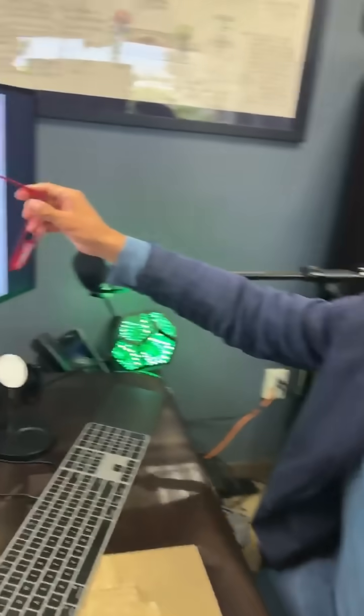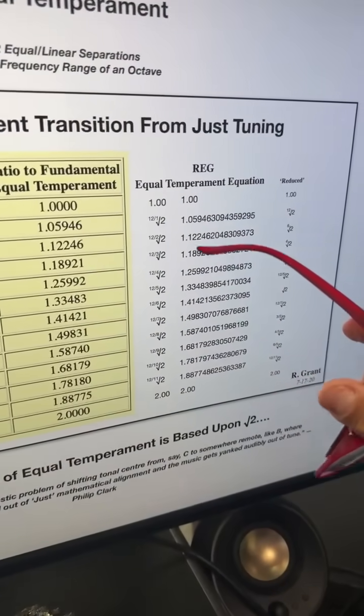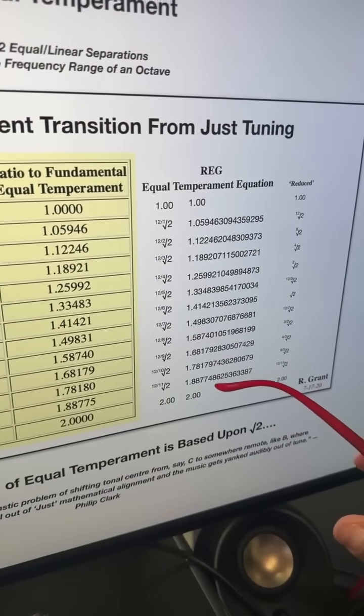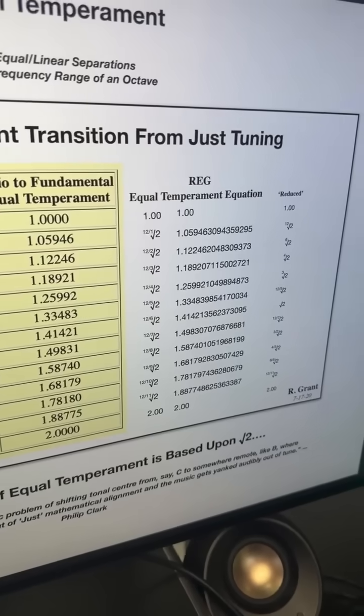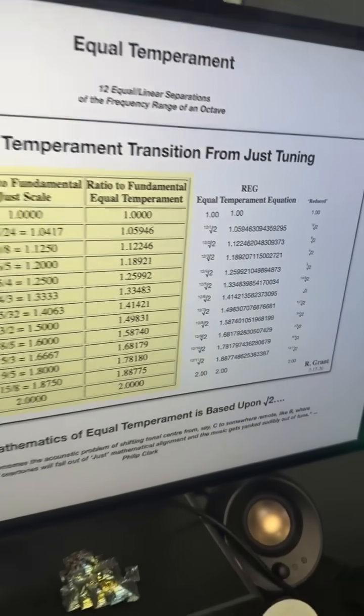There would be nothing. If 1 is the value on each one of these, come back around, if 1 is the value on each one of these, then all you would have for all of these values is the number 1. You would have no other values and no other differentiation. You would have no musical scale. You wouldn't have that.